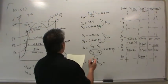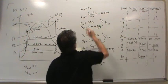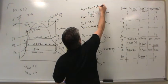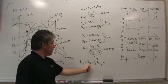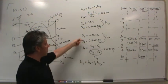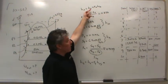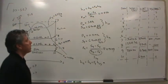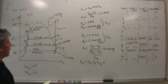Now that gives me the quality, and now I can calculate the enthalpy in state 10 as HF. Understand that this HF is not the same as this HF. This enthalpy of saturated liquid is at 200 kilopascals, whereas this enthalpy of saturated liquid is at 5 kilopascals — two totally different things, in the sense that they're at two different saturation lines.